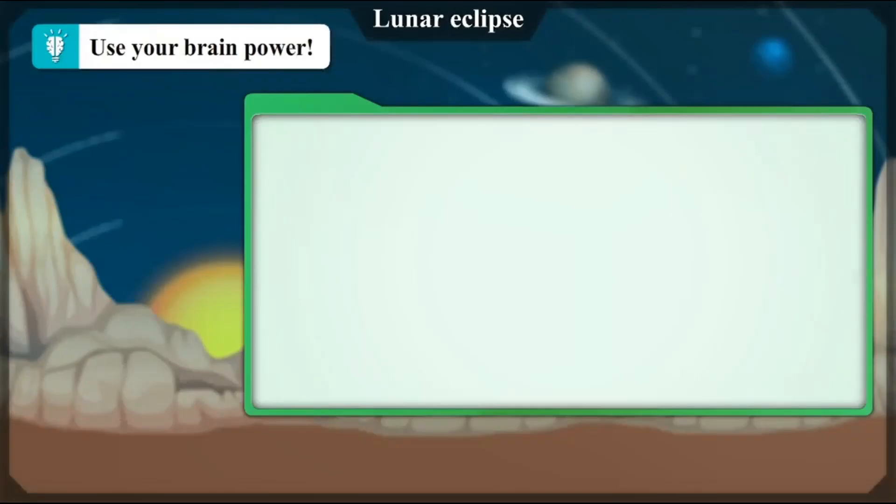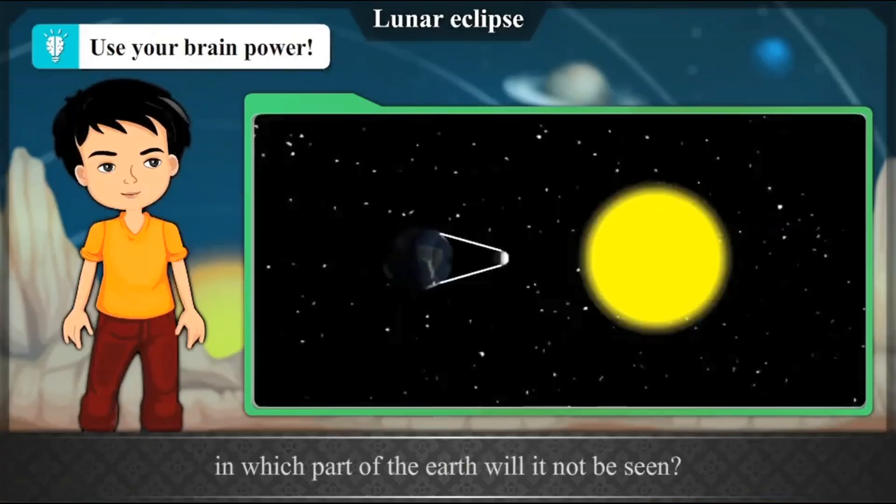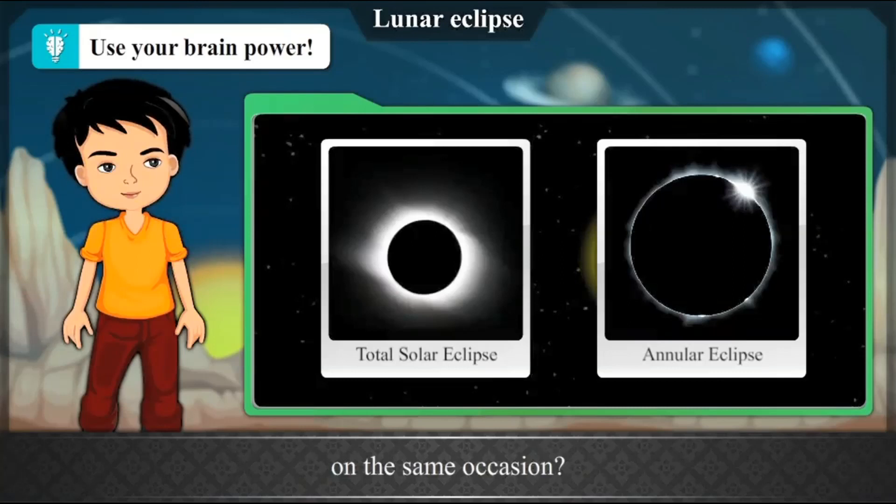Use your brain power. On the day of solar eclipse, in which part of the Earth will it not be seen? Can we see total and annular solar eclipses on the same occasion? Why is an annular lunar eclipse not seen? Which eclipses will you see from the Moon? Why are solar eclipses caused by the other planets not seen from the Earth? Think about it. When solar eclipses do not occur on a new Moon day, does it mean that the Moon does not have any shadow at all?